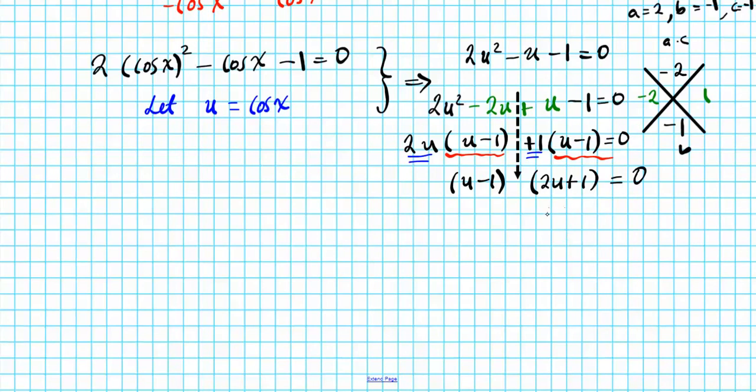Let's keep on going. So we're now going to use the zero product property. We have u minus 1 set to 0, and 2u plus 1 set to 0. To finish this up, you just simply add one to both sides, and you have u equals 1. And then here we subtract 1, get 2u equals negative 1, and then divide by 2, and you have u equals negative 1 half.